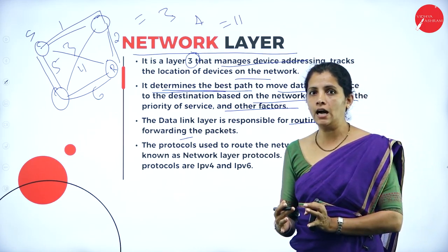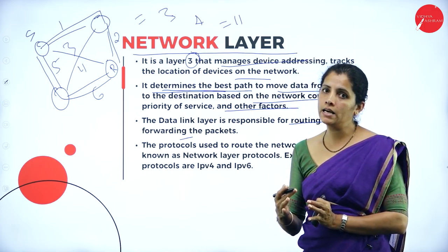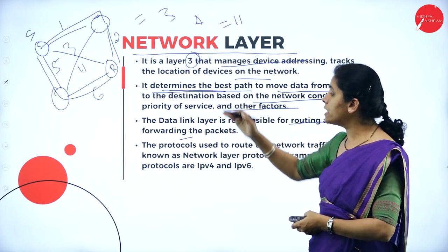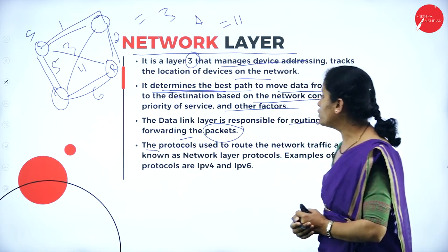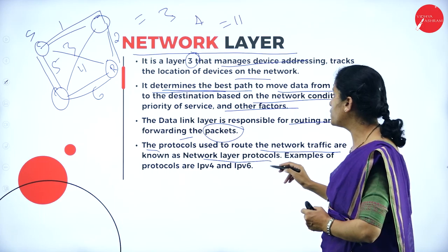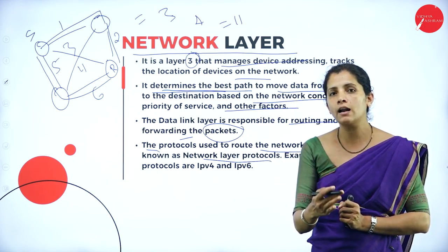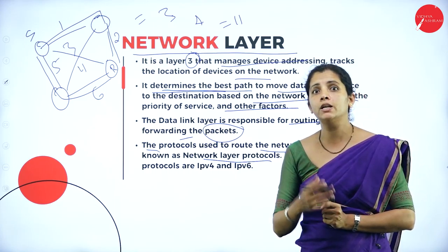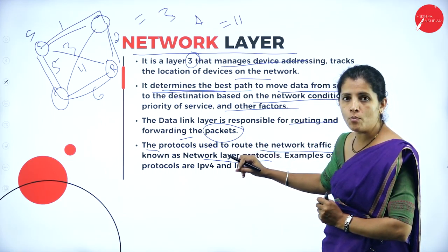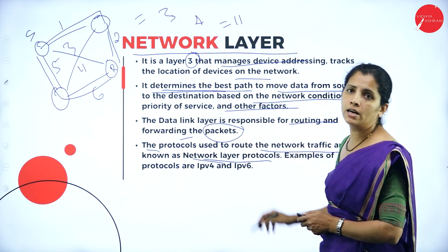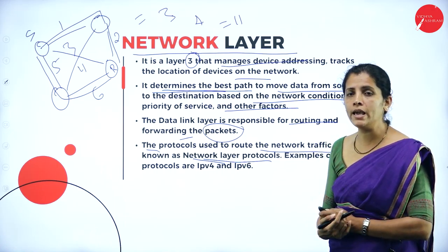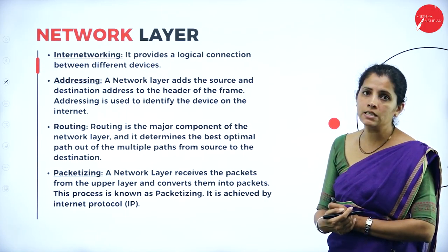To summarize the data unit names: in the physical layer the data are bits, in the data link layer they are called frames, and in the network layer they are renamed as packets. Protocols used to route network traffic are called network layer protocols — examples include IPv4 and IPv6. Protocols are nothing but rules or agreements between two devices for sending data.